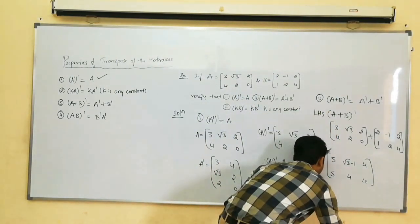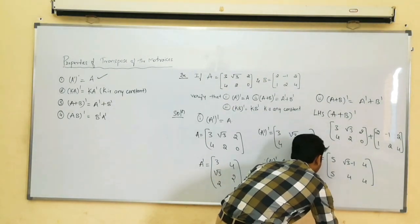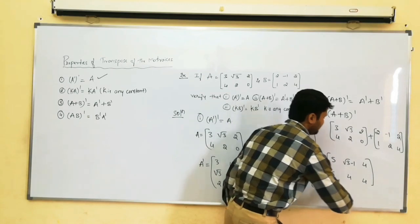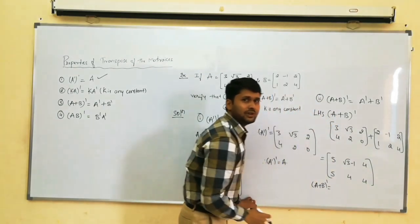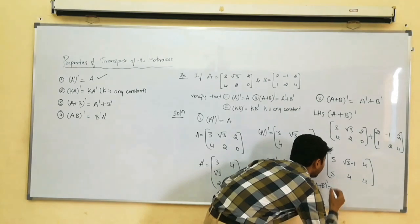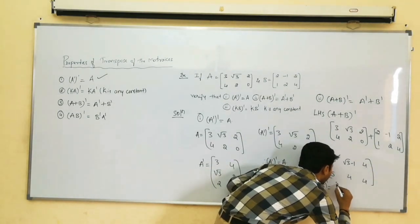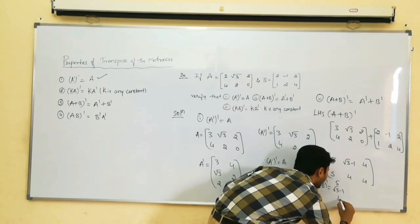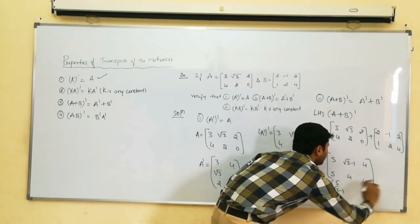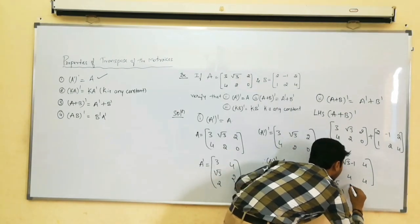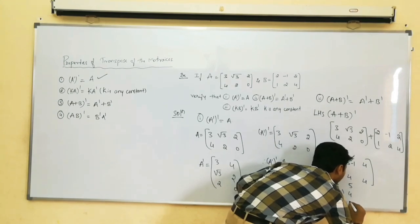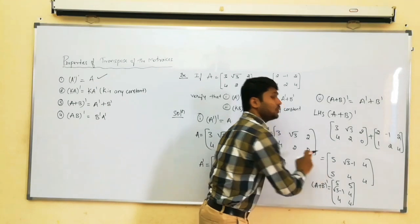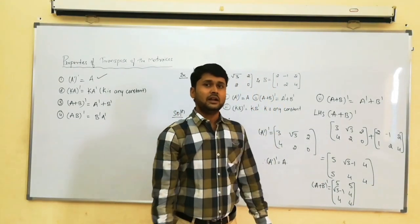A plus B whole transpose: writing first row as first column and second row as second column. First column: 5, 5; second column: root 3 minus 1, 4; third column: 4, 4. This is A plus B whole transpose.